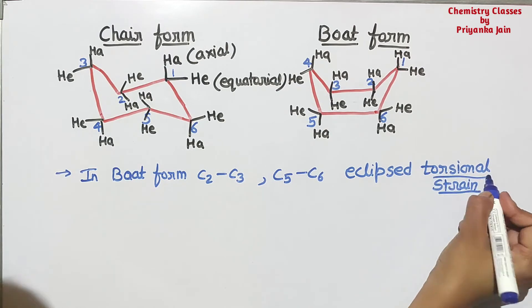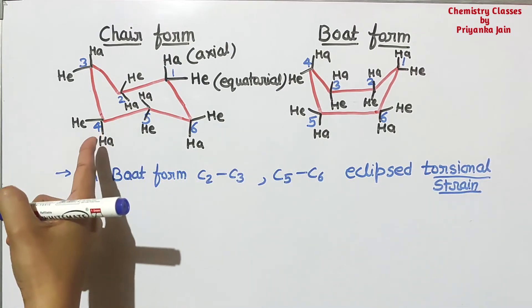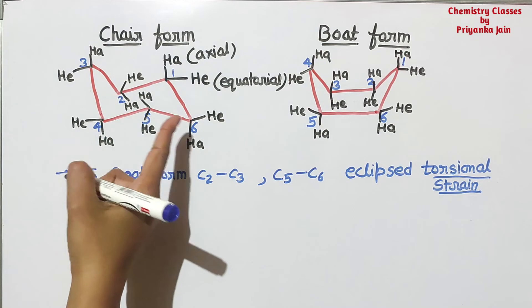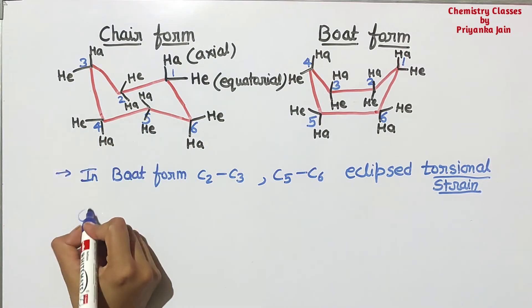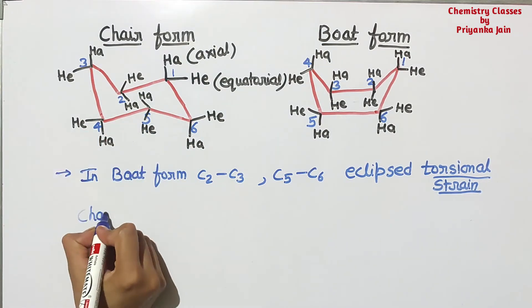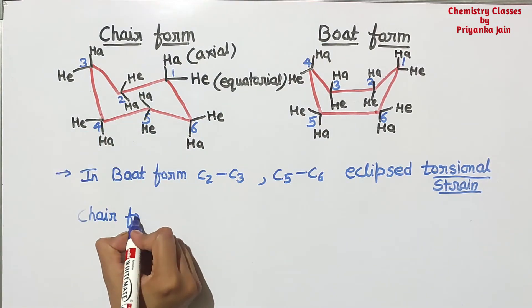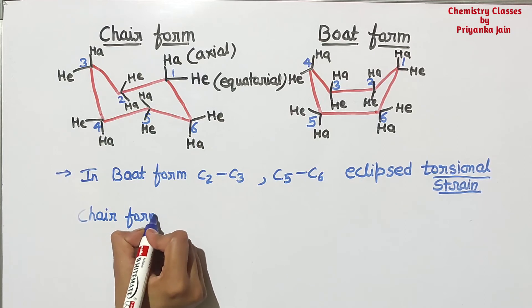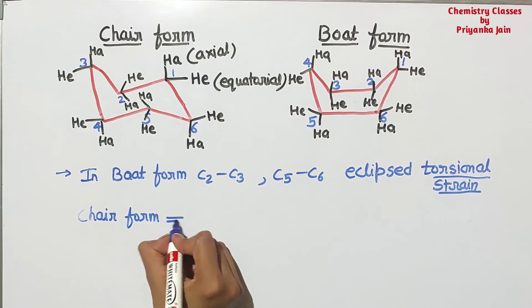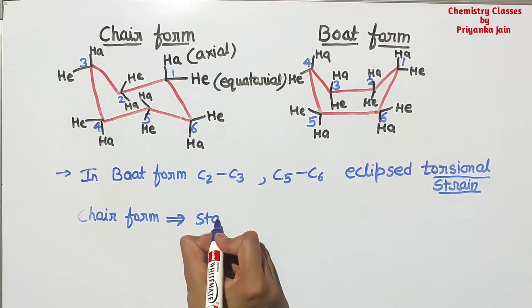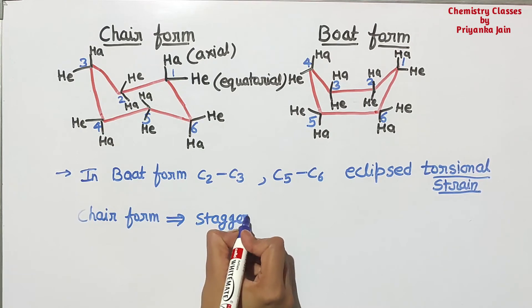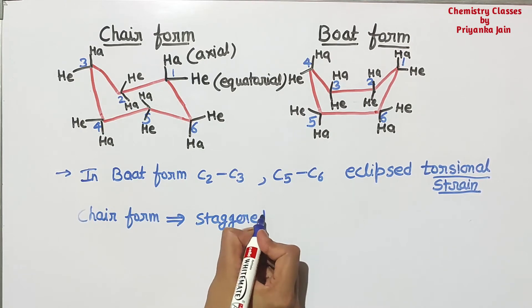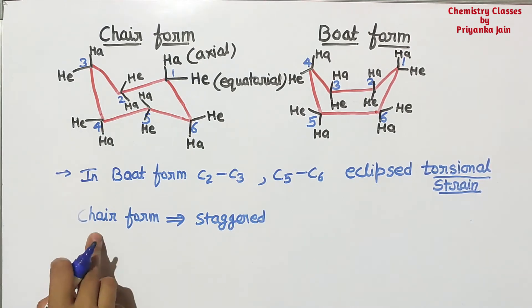While in the chair form, all the hydrogens are in the staggered form. We know that the staggered form has more stability as compared to the eclipsed form. So the chair form is more stable.